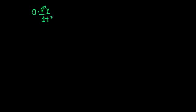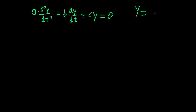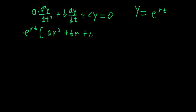Let's continue solving more differential equations. We've been working with second order linear homogeneous differential equations with constant coefficients — basically anything of the form a times the second derivative of y with respect to t, plus b times the first derivative, plus c times y equals zero, where a, b, and c are constants. We know we can solve these by trying the solution y equals e to the rt, and if we plug that in we get e to the rt times a·r² plus b·r plus c equals zero.